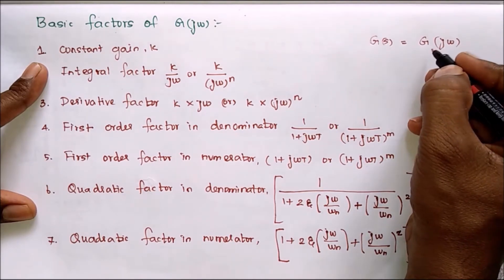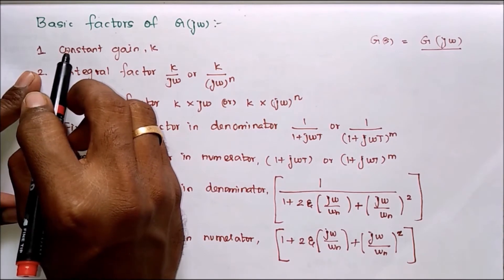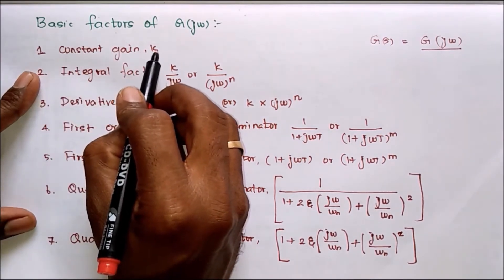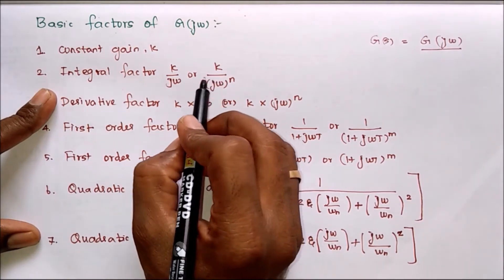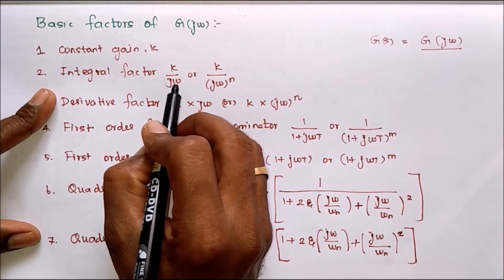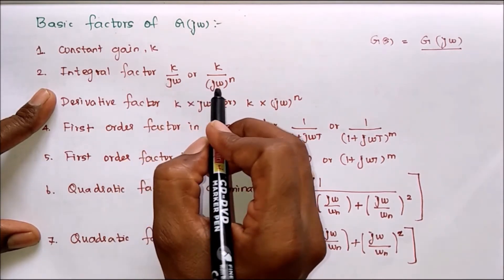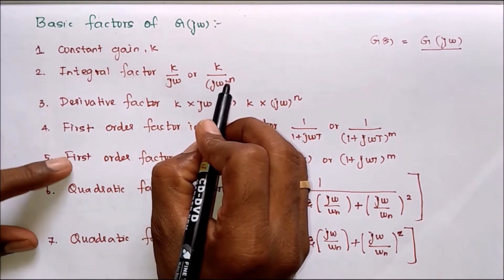So now G will be in the following form. It may have only constant gain K. Suppose if the gain is integral factor alone, integral factor means we can say K divided by S term, which means K divided by jω. Its order if it is power n, this is first order or nth order.